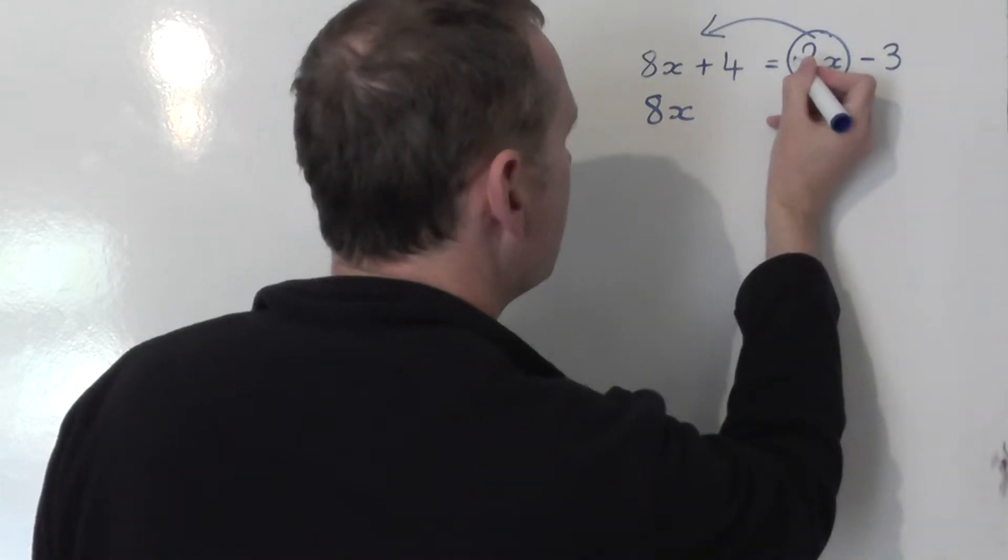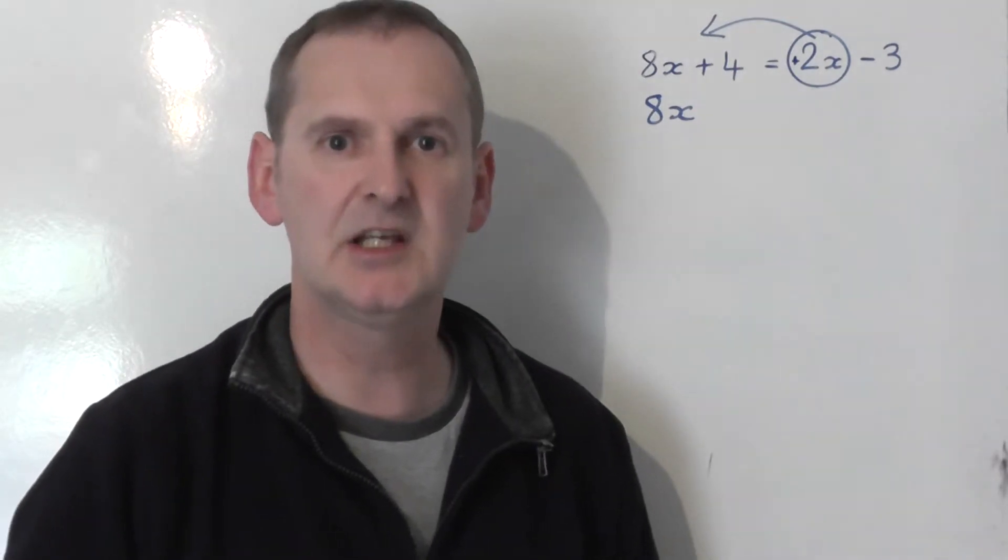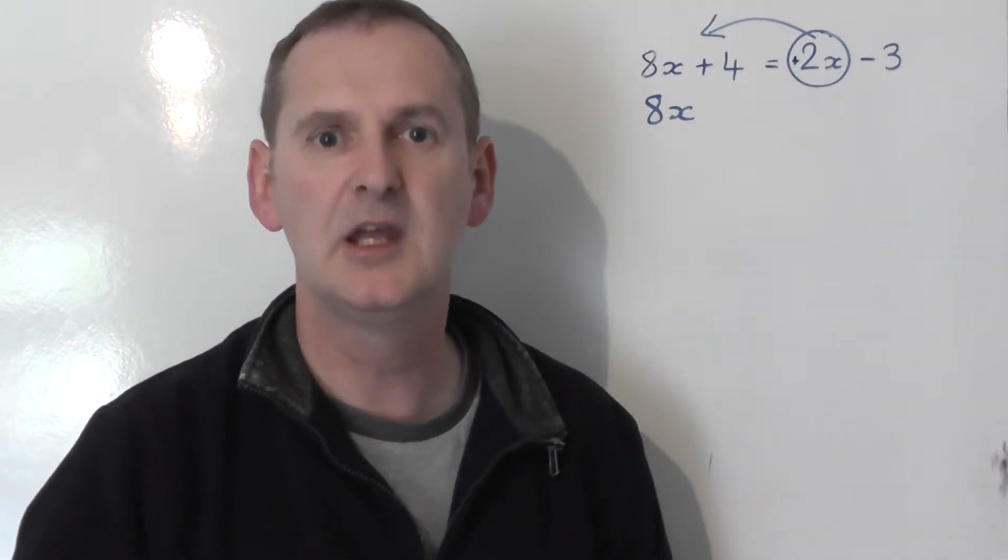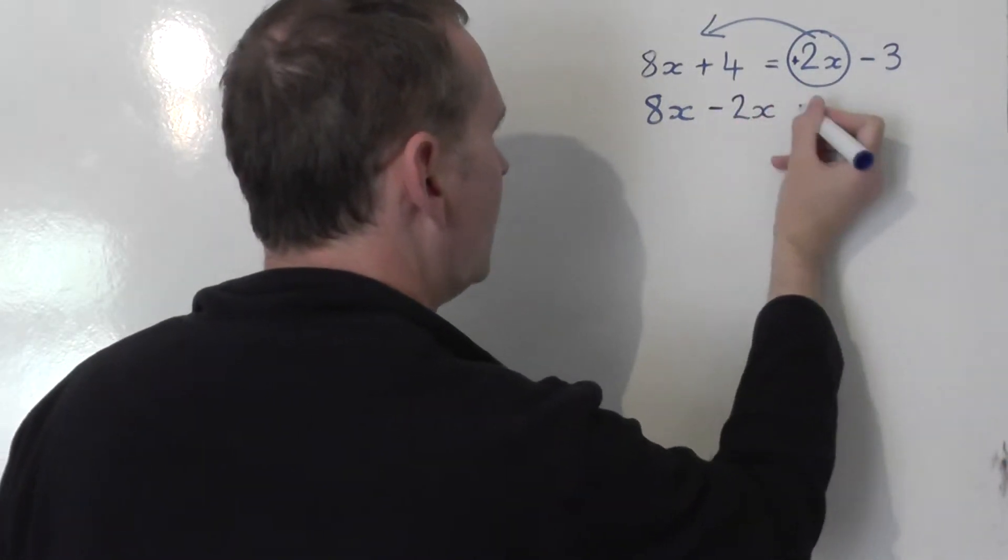Now currently there's a plus sign in front of the 2x, even though you can't see the plus, it is a plus 2x. Take it to the other side, swap sides, it swaps signs. And so the plus 2x becomes a minus 2x on the left-hand side.